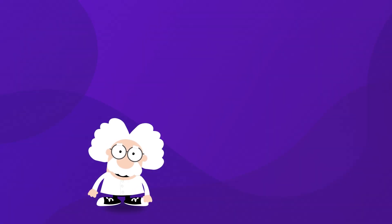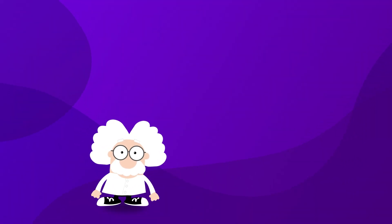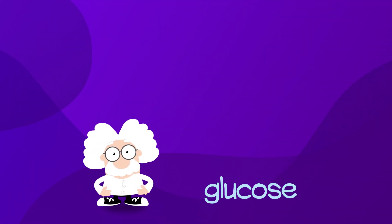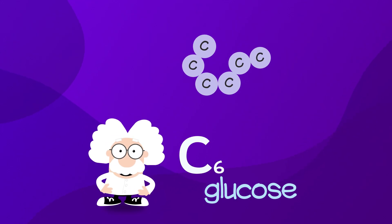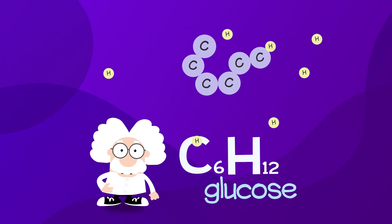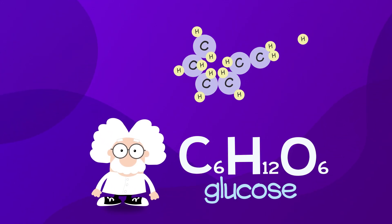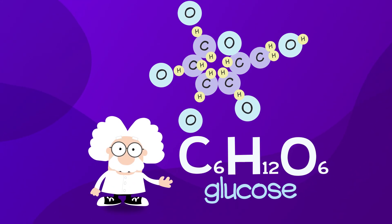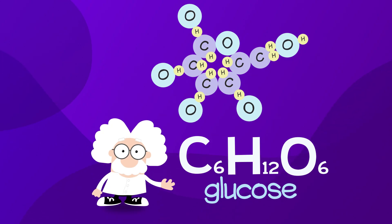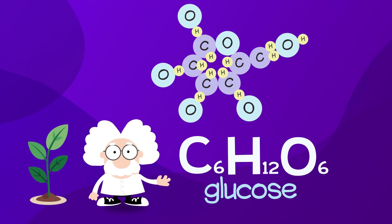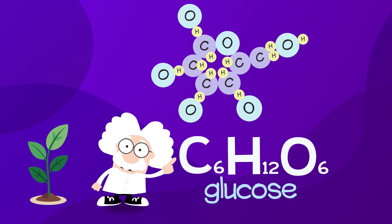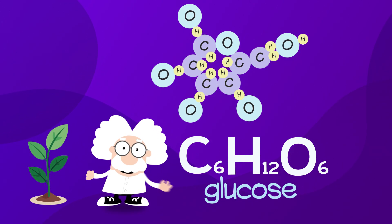Others are larger, like glucose, which has six carbon atoms, twelve hydrogen atoms, and six oxygen atoms. This plant-made sugar is a vital part of the food web.